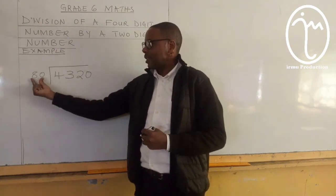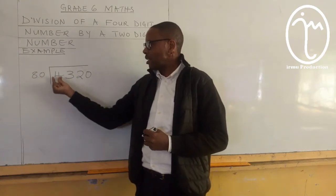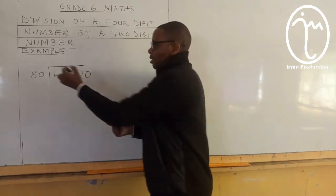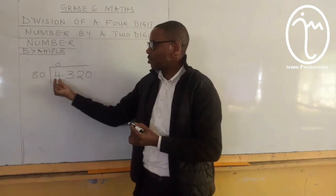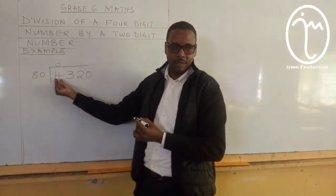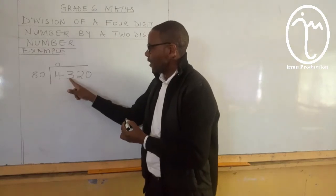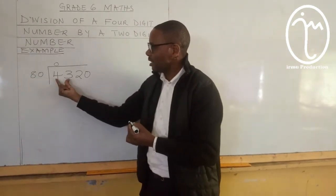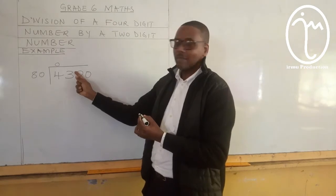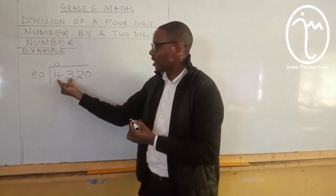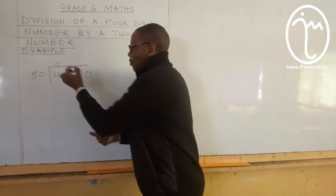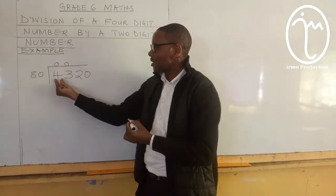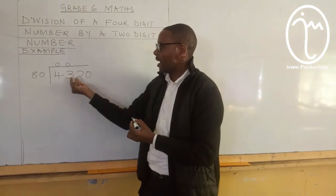So, the first question we ask ourselves is: how many times can 80 go into the first digit 4? And since 4 is smaller than 80, we just put a zero to show that 80 cannot go into 4. We combine now 4 and 3 — we form a 43. We ask ourselves the same question: how many times does 80 go into 43? I know you are saying it can't, because 43 is smaller than 80, so you put another zero here. Now you combine the three digits and ask yourself: how many times does 80 go into 432?